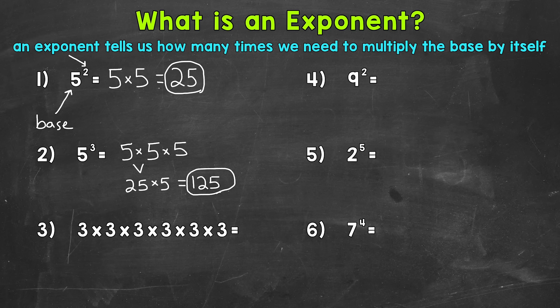Let's move on to number 3, where we have 3 times 3 times 3 times 3 times 3 times 3. It's currently in expanded form — everything is expanded out. Let's write this in exponential form, as a base and an exponent. Our base is going to be the number being multiplied by itself, so in this case our base is 3. Our exponent is going to be how many times that number is expanded out — how many times it's being multiplied by itself: 6. So we have 3 to the power of 6, or 3 to the sixth power.